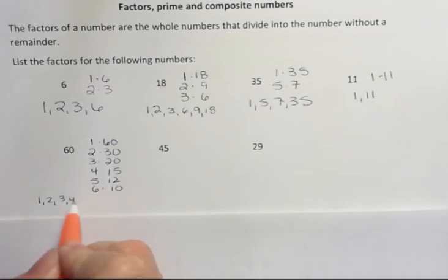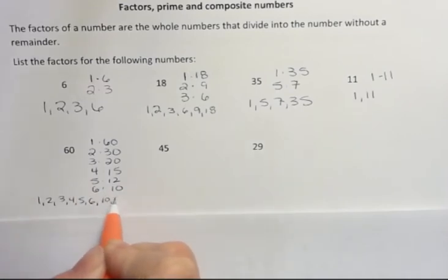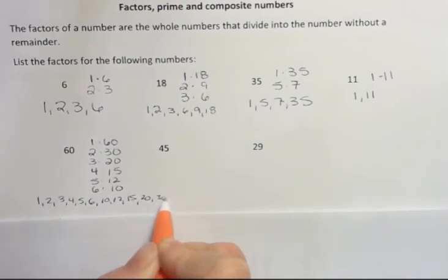1, 2, 3, 4, 5, 6, 10, 12, 15, 20, 30, and 60. So there's a lot of factors of 60.